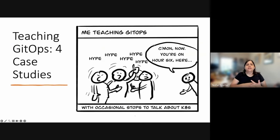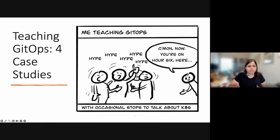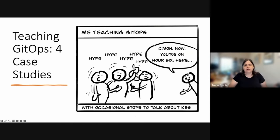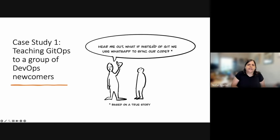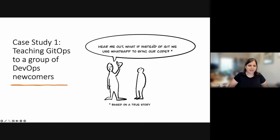I'm going to talk about teaching GitOps through four case studies. Each one describes a certain kind of audience. If you don't find your audience in one of these four case studies, that's okay — at the end I'll share some general tips that apply to all audiences. Case study one: teaching GitOps to a group of DevOps newcomers. This is basically the Opschool students who are the inspiration for this talk, and yes, this illustration is based on a true story.